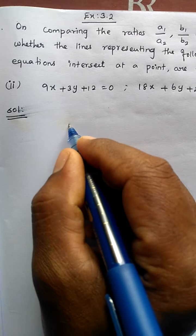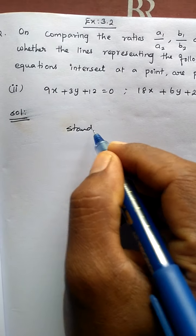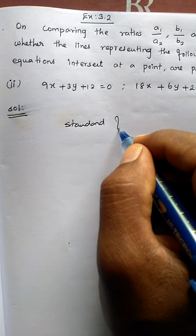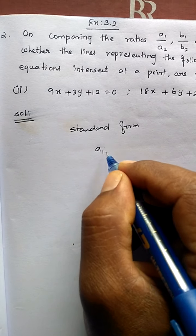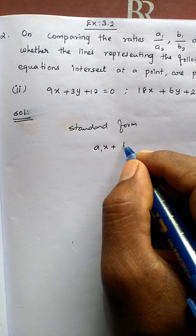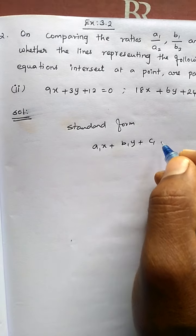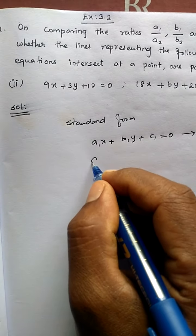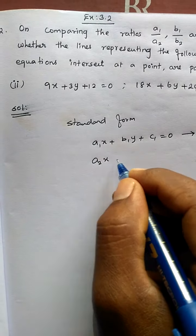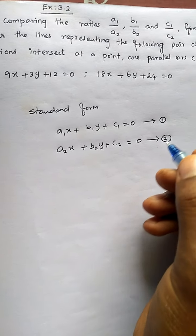Let's write the standard form. The standard form for the first equation is a1x plus b1y plus c1 equal to 0 for equation 1, and a2x plus b2y plus c2 equal to 0 for equation 2. These are the standard forms of the linear equations.